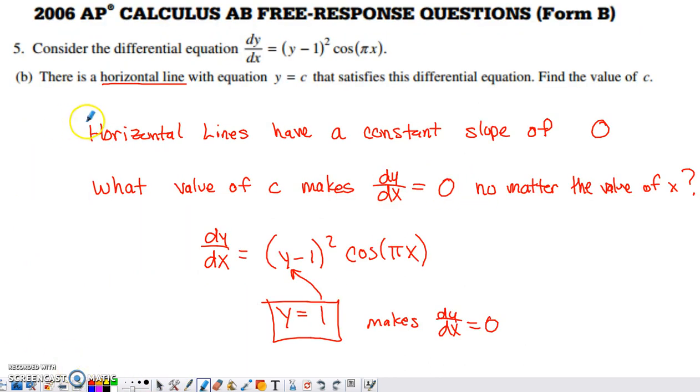In part B, it says there's a horizontal line with equation y equals c that satisfies the differential equation. What is this value of c? Here's what I thought whenever I read that. If this is the solution to the differential equation, the slope of this horizontal line is going to be zero, right? Slope of a horizontal line is zero. So then I had to try to figure out what value of c makes the derivative have a constant value of zero, no matter what the value of x is.